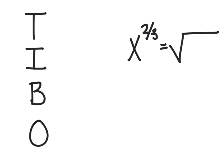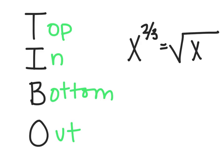The easiest way to help you remember this is if you can remember the acronym TIBO. TIBO stands for top in, bottom out. So that means whatever is on top, which is the 2, is what's going to go inside the square root, or inside the radical, so we're going to put x to the second. And the bottom number of the fraction, the 3, is going to be our index, and that's going to go here on the outside.